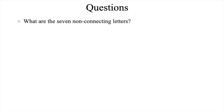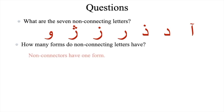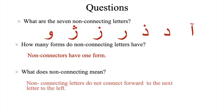What are the seven non-connecting letters? Aleph, Dahl, Zal, Re, Ze, Je, Vav. How many forms do non-connecting letters have? Non-connectors have one form. What does non-connecting mean? Non-connecting letters do not connect forward to the next letter to the left. Non-connecting letters have one form and don't connect from the left side. Don't miss our next video to learn about the basic features of the Persian vowels.